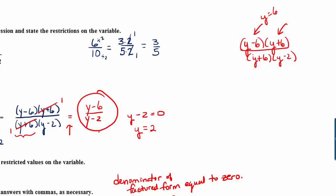In fact, it does not give you an undefined expression. If you plug 6 in, you get 6 minus 6 times 6 plus 6 over 6 plus 6 times 6 minus 2. This gives us 0 times 12 over 12 times 4, which gives us 0 over 48. 0 divided by a number is 0. That's allowed. It's not undefined. Whereas a number divided by 0 is undefined.